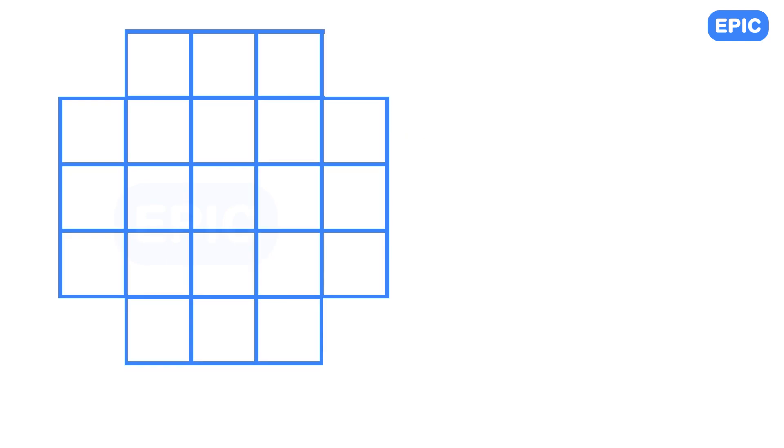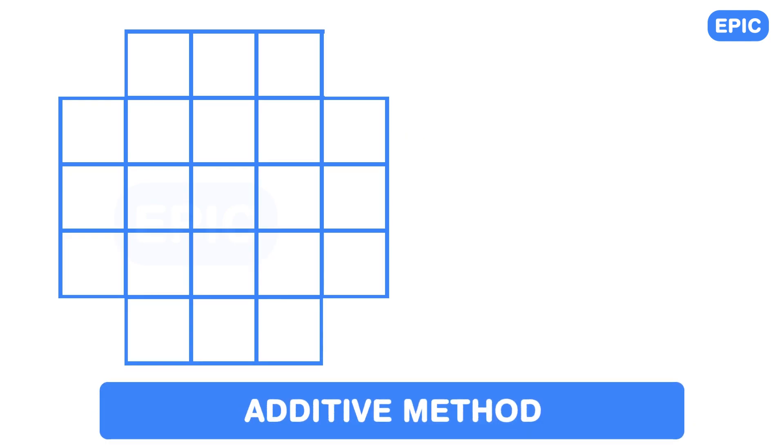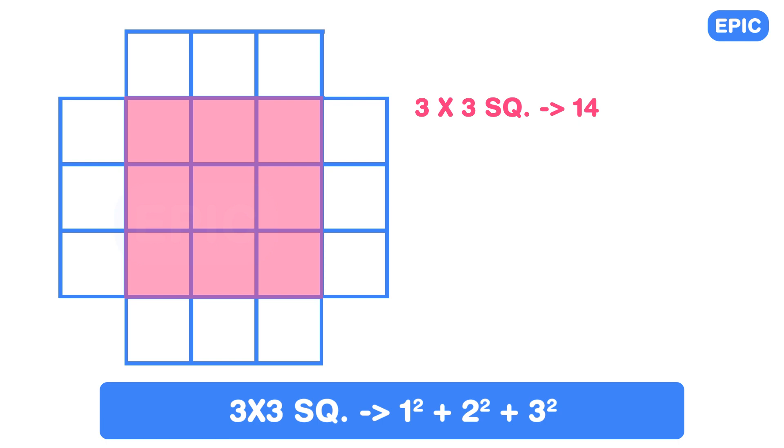We can also solve it using additive method, which in my opinion is easier and faster to calculate. We can look at this figure as a complete 3 x 3 square, to which 1 square is added at all sides except at the corners. A 3 x 3 square will have a total of 1 plus 4 plus 9, 14 squares.